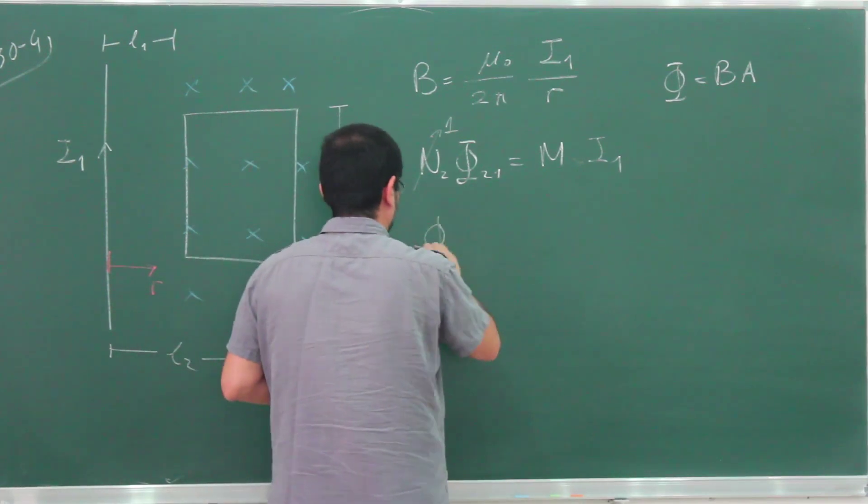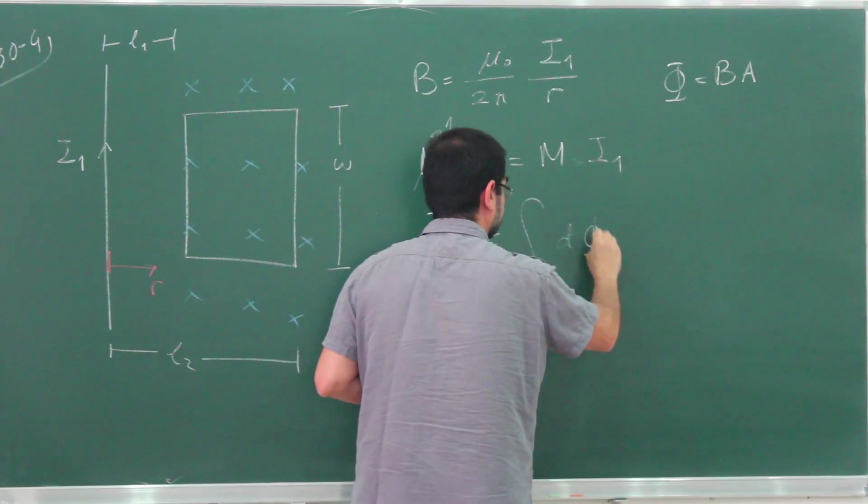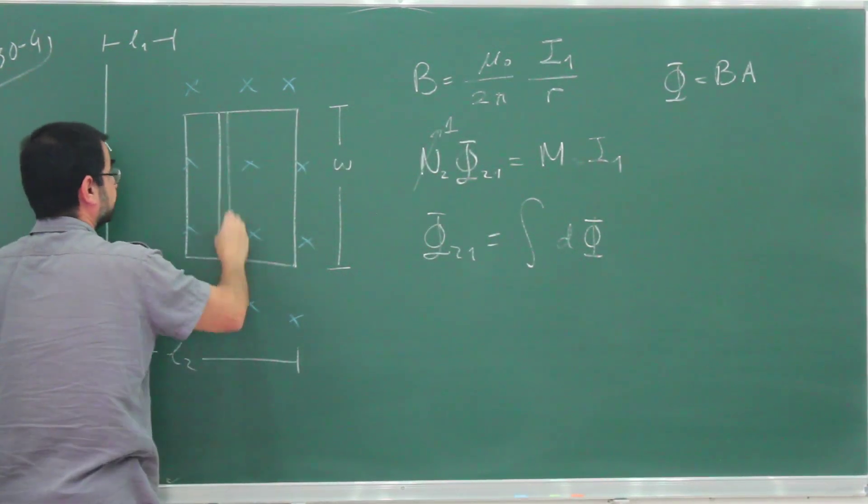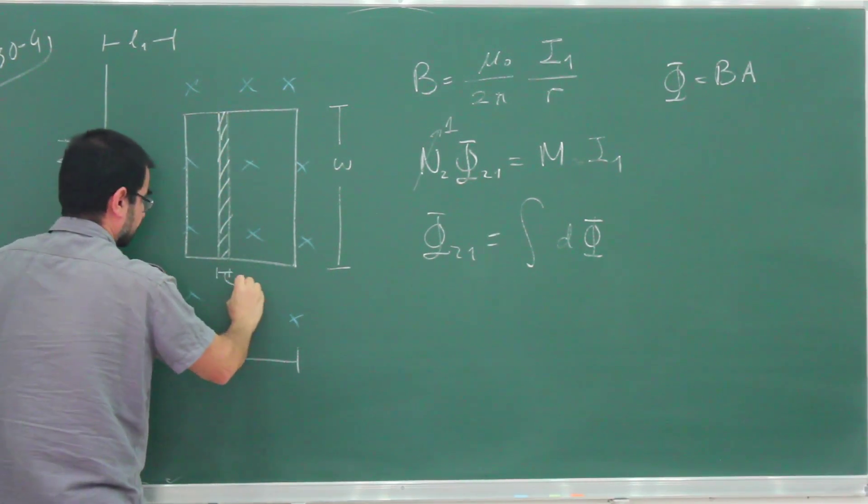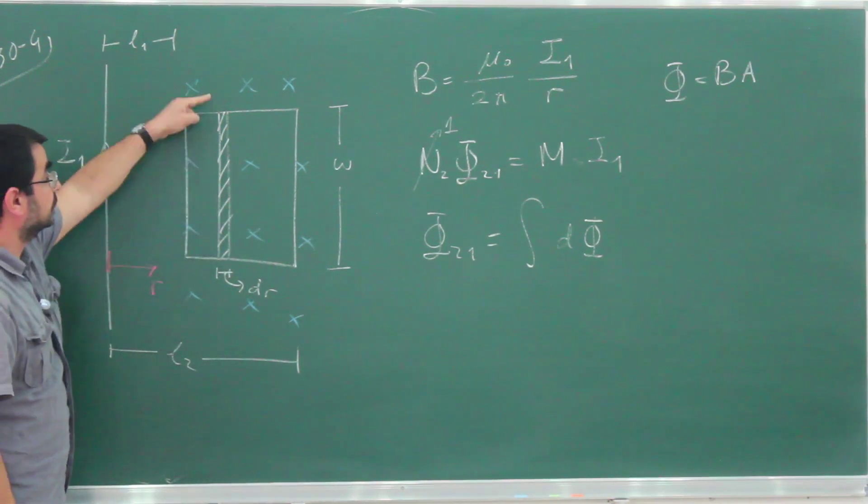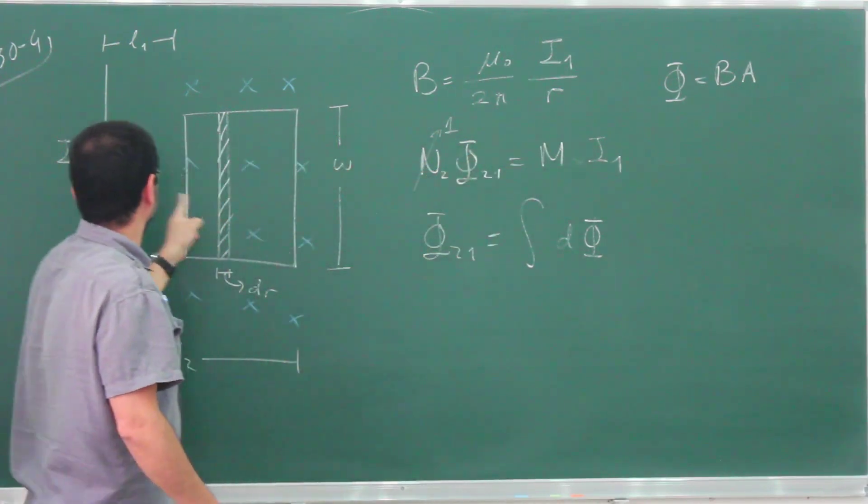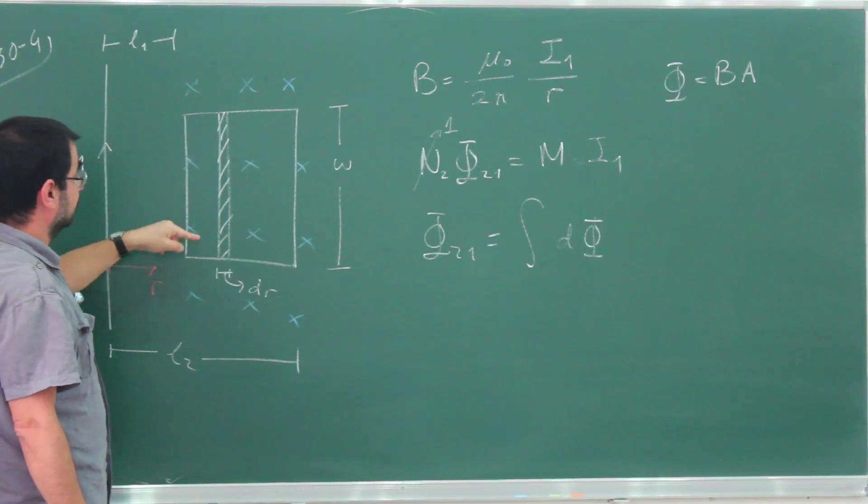So Φ21 is going to be the integral of little fluxes dΦ. What I'm going to do is divide this into little strips, each with thickness dr. The magnetic field over these strips is uniform - they all have the same distance r from the current-carrying wire - so I don't need to divide this into other little parts.